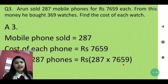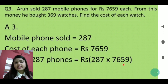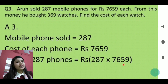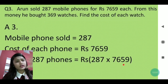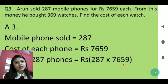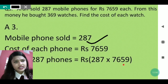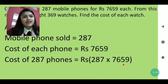Next question: Arun sold 287 mobile phones for ₹7659 each. From that money, he bought 369 watches. Find the cost of each watch. First, find the total money earned by selling all mobile phones. Write: number of mobiles sold = 287, cost of each mobile = ₹7659, then multiply these two.